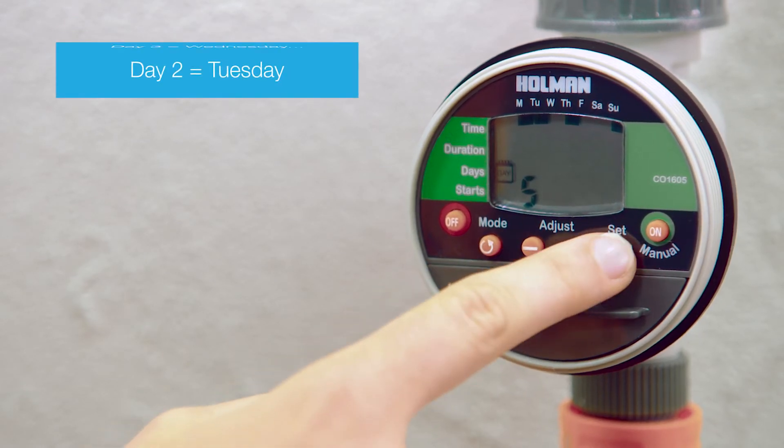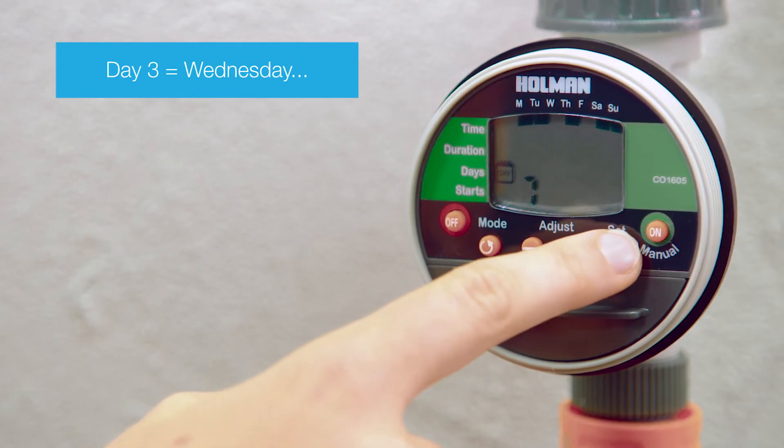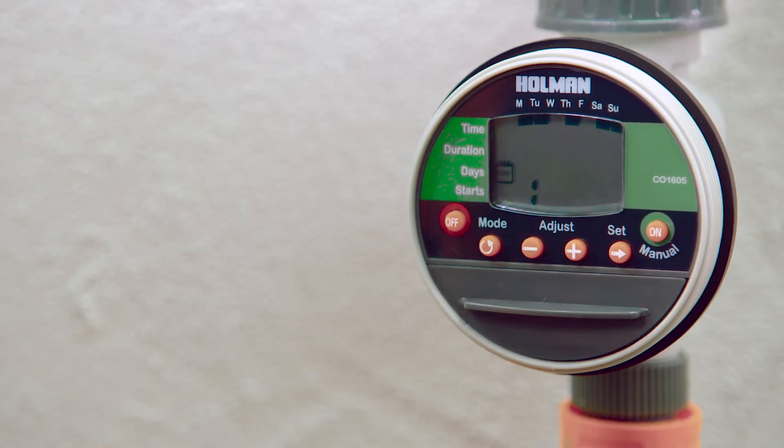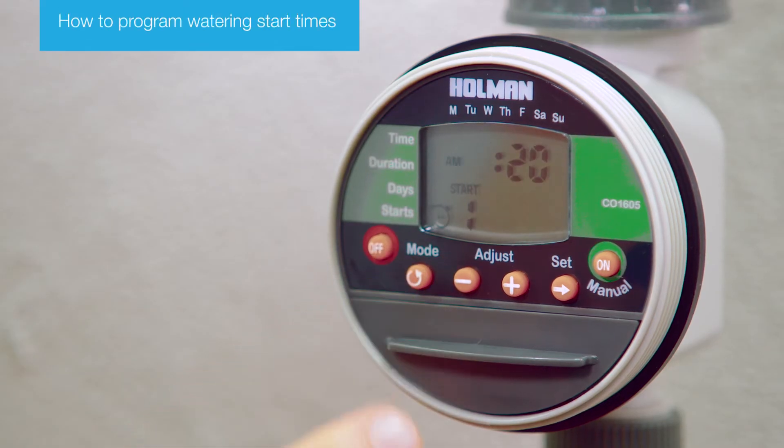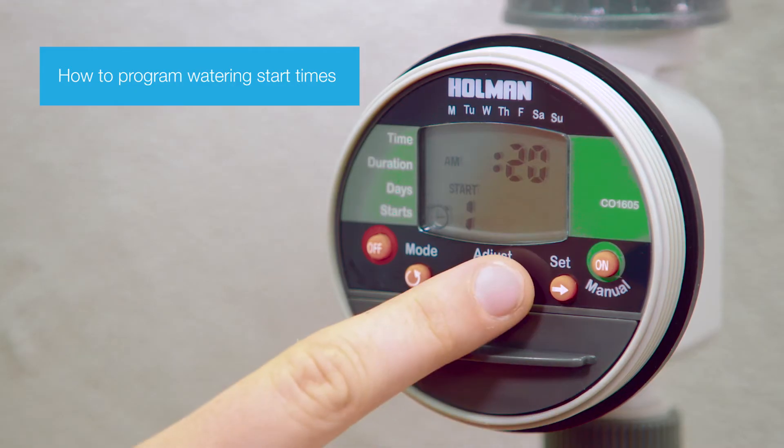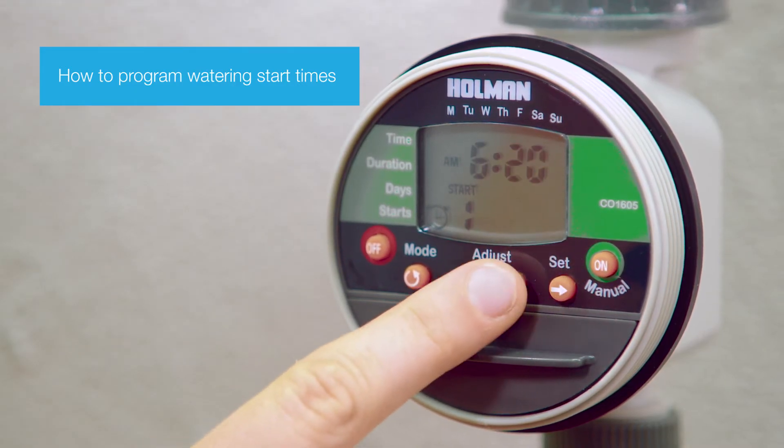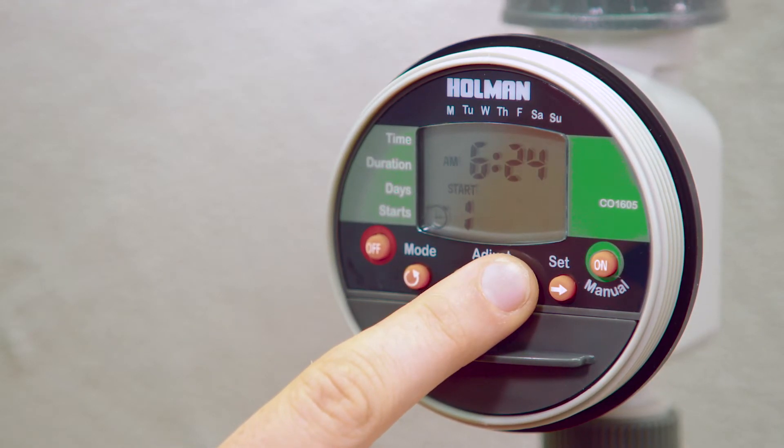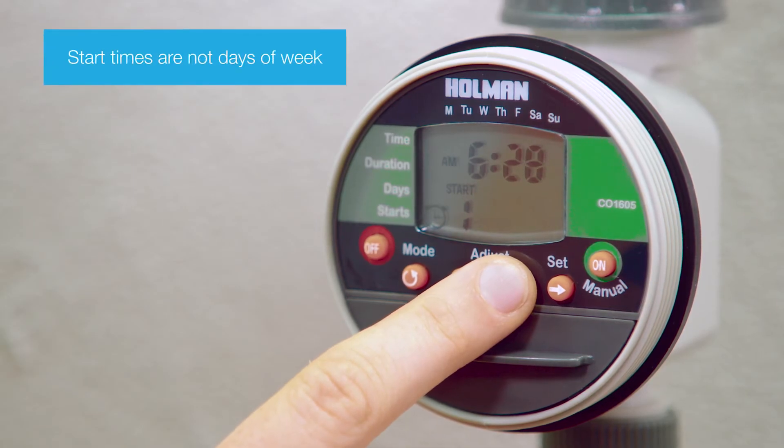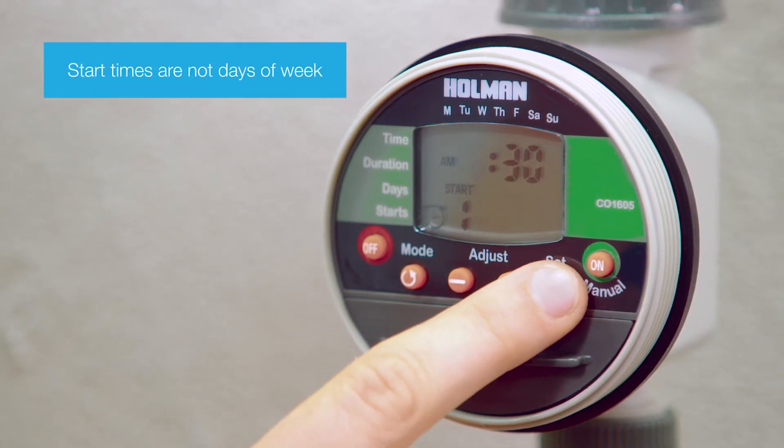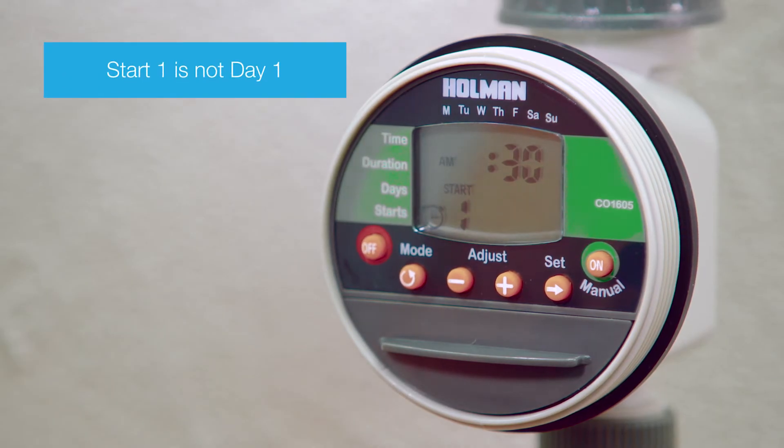It is now important to note that you have set the days of the week that you want to water. Next, set the number of times that you want to water on a day. For example, if you want to water once per day, set start one only, i.e., 6:30 a.m. Do not adjust start two, three, and four. They must remain off.